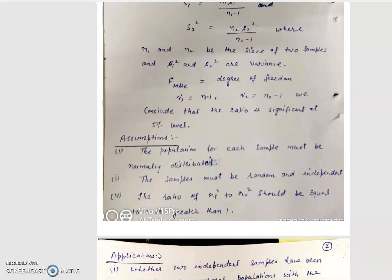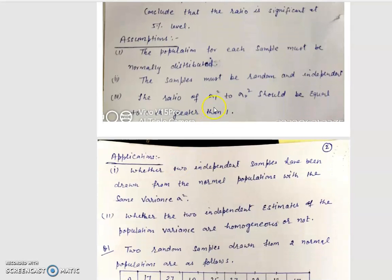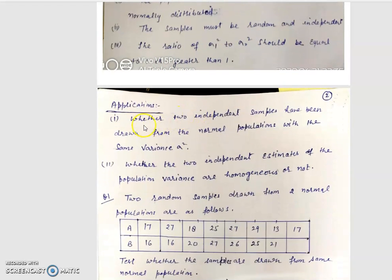These are the two assumptions of the F test. First, the sample must be normally distributed, and the ratio of S1² to S2² should be equal to 1 or greater than 1. The applications of F test are: whether two independent samples have been drawn from the normal population with the same variance, and whether two independent estimates of the population variance are homogeneous or not.